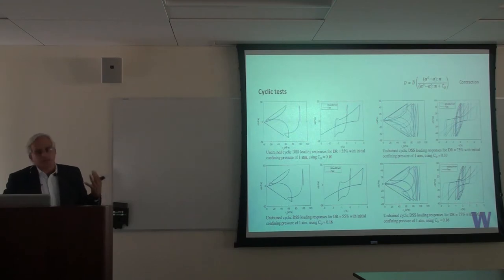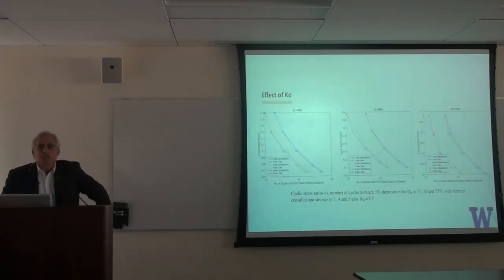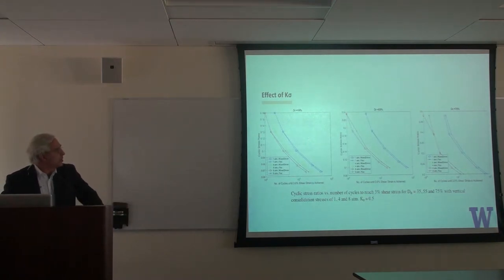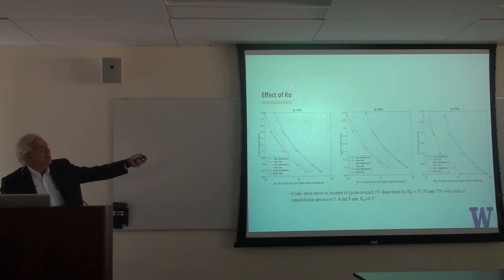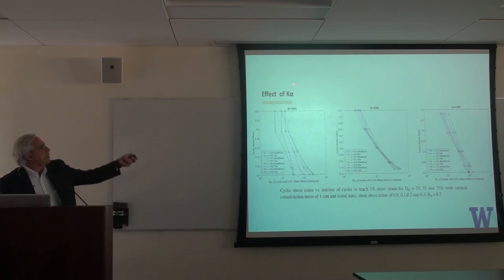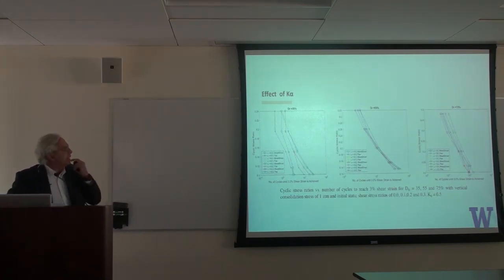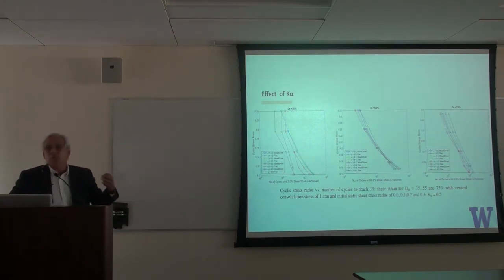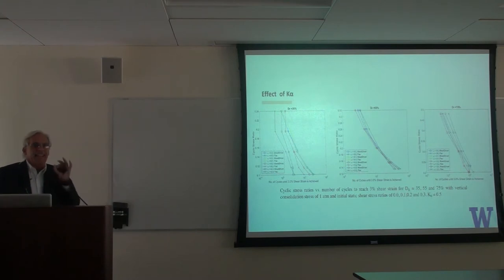Once we had confidence that the model was good, we did many more cyclic tests, counting the number of cycles needed to reach liquefaction for different cyclic stress ratios. In particular, we were looking at the effect of K-sigma — the effect of overburden — and comparing FLAC and OpenSees. We were also looking at the effect of K-alpha, meaning the effect of having different initial shear stresses in the system. The results are not exactly the same, as these are two very different implementations, especially when pushing the model with extreme situations.